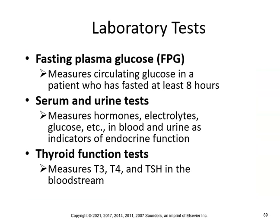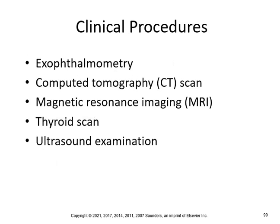For lab tests: fasting plasma glucose (FPG) measures circulating glucose in a patient who has fasted at least 8 hours. Serum and urine tests measure hormones, electrolytes, glucose in blood and urine as indicators of endocrine function. Thyroid function tests include T3, T4, and TSH in the bloodstream. Clinical procedures include exophthalmometry, computed tomography, magnetic resonance imaging, thyroid scan, and ultrasound examination.